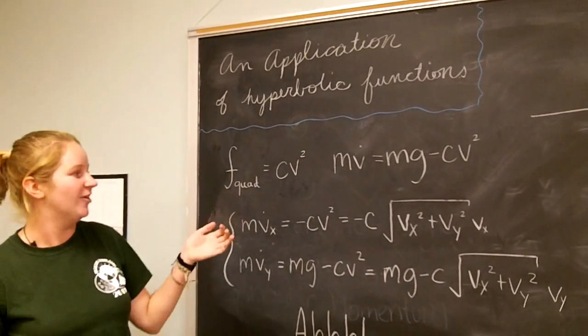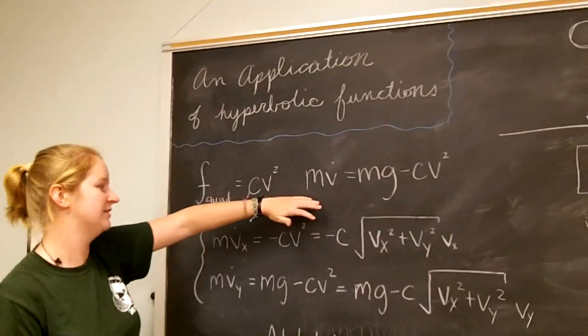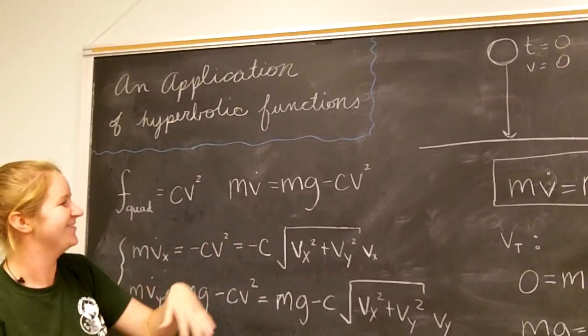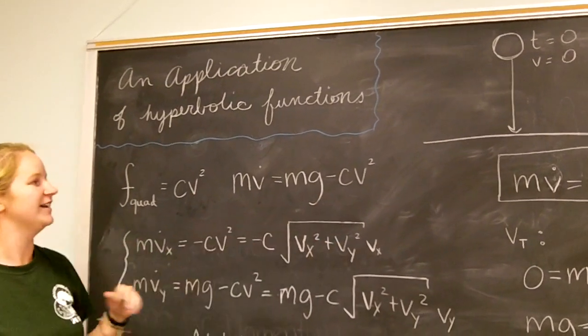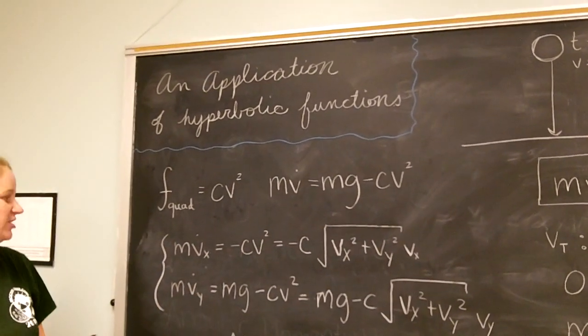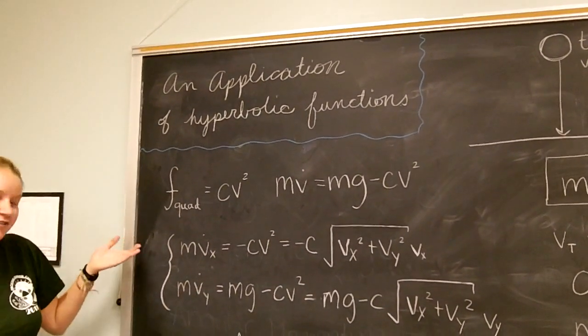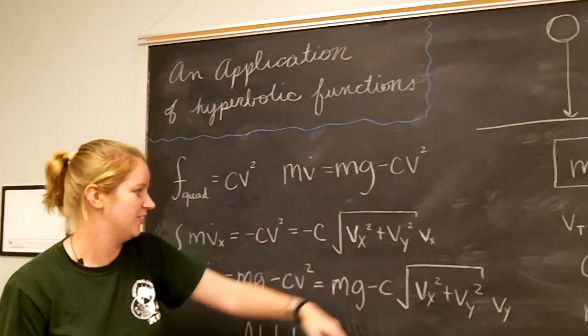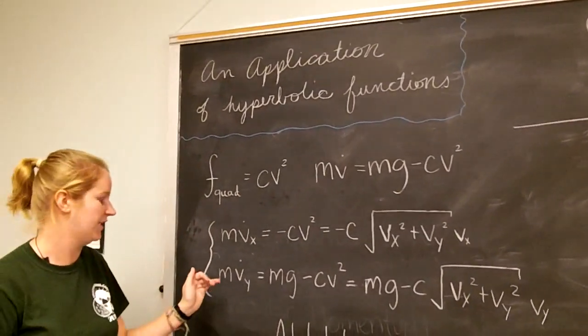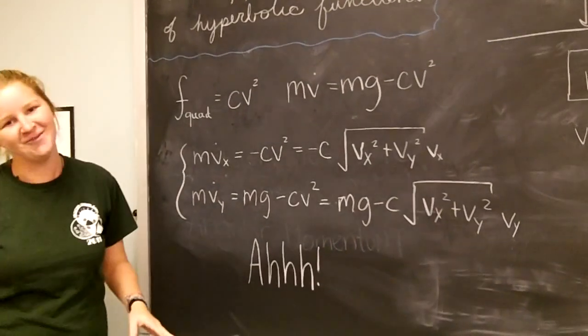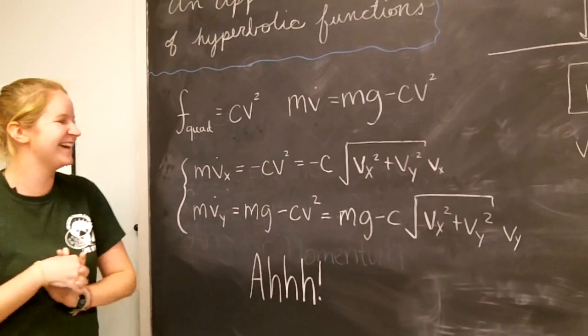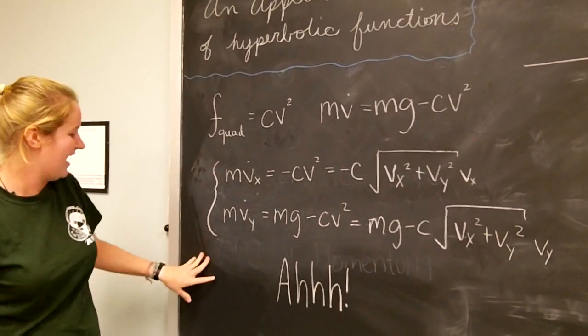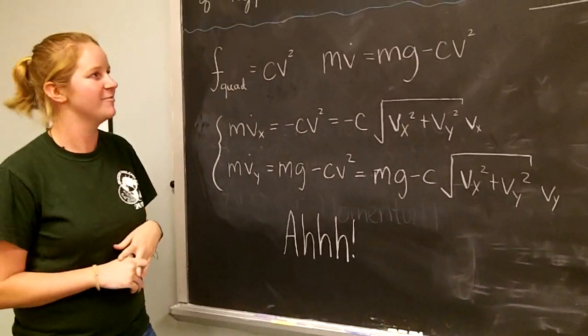So using Newton's second law, I give the equation mv dot equals mg, gravity force due to gravity, minus Cv squared if down is our plus direction. So you would have to break that into both the x and y components. So I have them written out right here as a function of both x and y. Okay, so these problems aren't solvable. We would need to use numerical solutions and methods, and that's not going to happen.